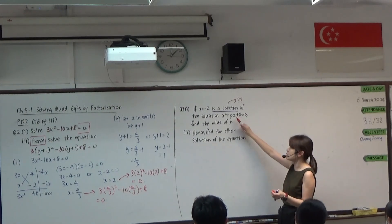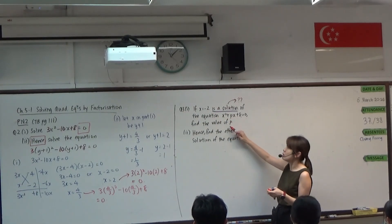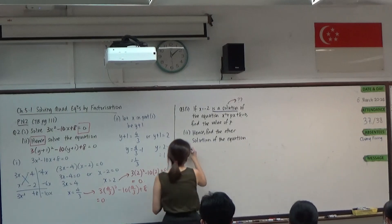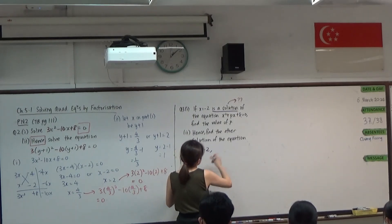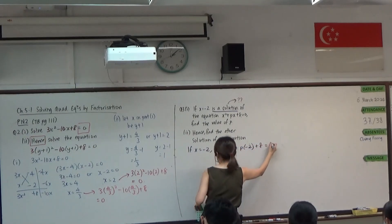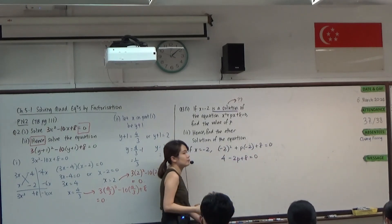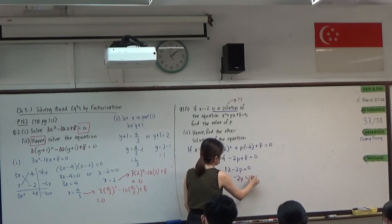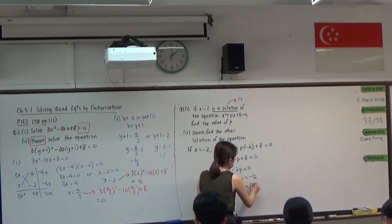So that is what it means — if x equals negative 2 is a solution, placing it into the equation means the value must equal 0. But we are unable to fully solve now because we have this unknown p. I can only replace x with negative 2; I cannot replace p. But that is also the point of the question — to find the value of p. So we replace x with negative 2 to get 4 minus 2p plus 8 equals 0. Then 4 plus 8 gives us 12, and we solve the equation to find p equals 6.